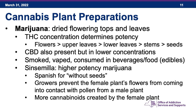Sinsemilla is a particular type of marijuana product that is very high potency. Sinsemilla is the Spanish word for 'without seeds' — growers prevent the female plant's flowers from coming into contact with flowers from a male plant, so the plant doesn't get pollinated. Since the female plant is not used in creating more plants, it produces more cannabinoids, resulting in a higher concentration of cannabinoids in sinsemilla.